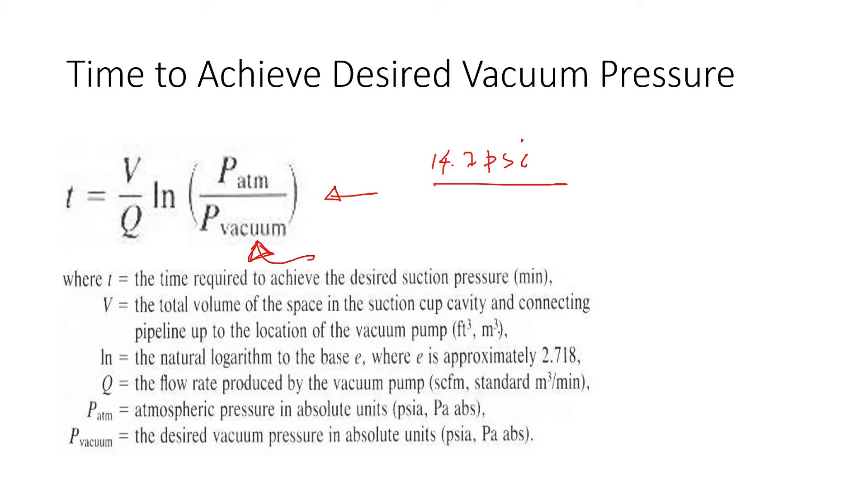Now, another thing you must be careful about is V is the volume all the way from the vacuum pump to the object that is being lifted by suction. So it's the total volume, pipings, valves, the area right under the cup. And so all of this volume is V.